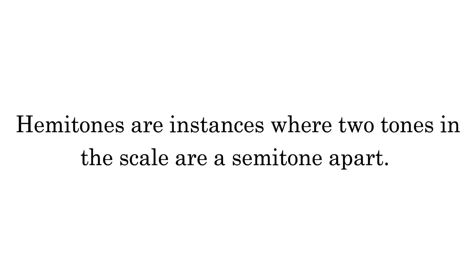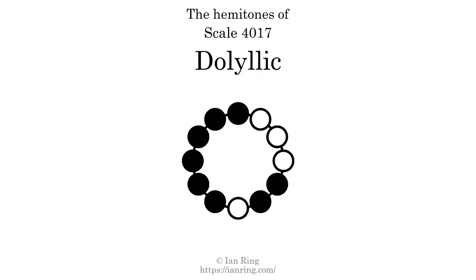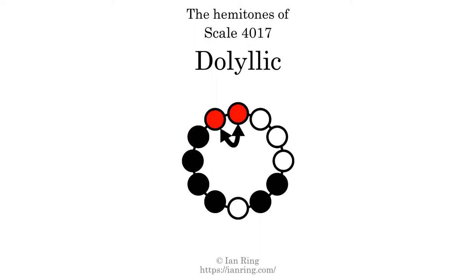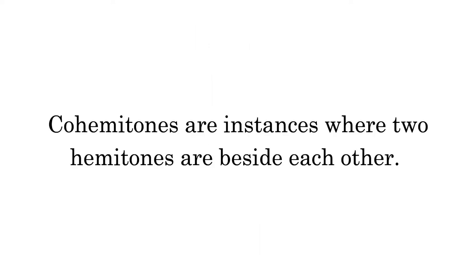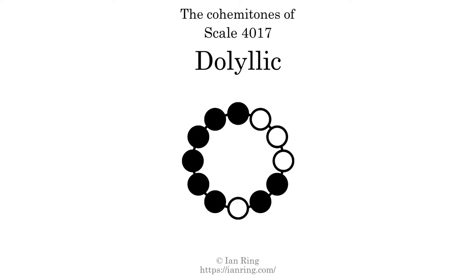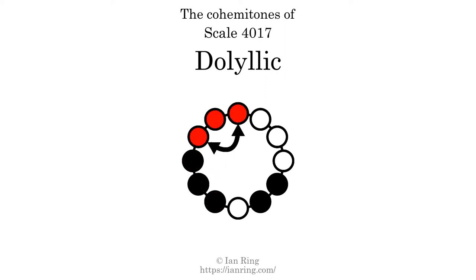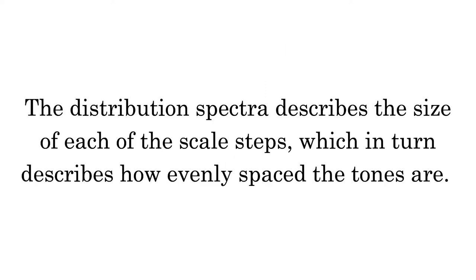Hematones are instances where 2 tones in the scale are a semitone apart. This scale has 6 hematones, at positions indicated in the diagram.